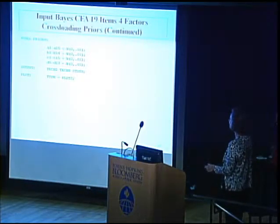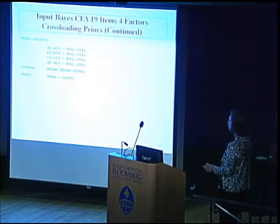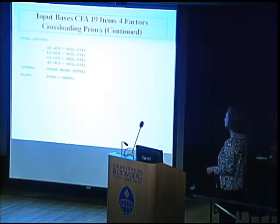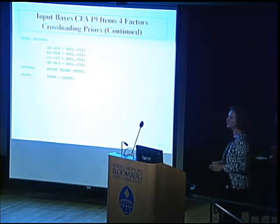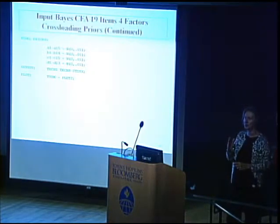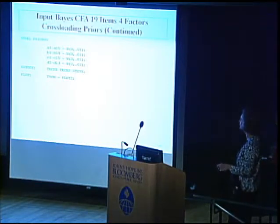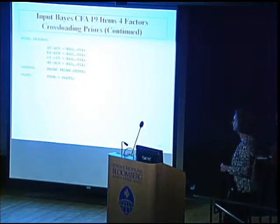In model priors, we give all cross-loading labels a normal distribution with mean zero and variance 0.01. The standard deviation is 0.1, so 95% of estimates lie between minus 0.2 and plus 0.2 — a very small range, just a little wiggle room for the cross-loadings. When we do that, we get the well-fitting model that does not reject. We receive parameter estimates for all cross-loadings, which we can examine to determine whether any should be freed from zero.